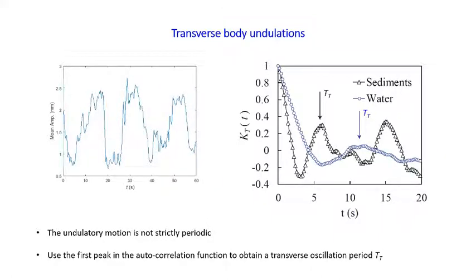We then plotted the amplitude of body fluctuation as a function of time as the worm undulates. The period is about 10 to 20 seconds — almost periodic but not quite. We applied an autocorrelation function to identify the main undulation frequency, marked by peaks for sediments and water. We found that in sediments, the worm is moving and undulating a bit faster than in water.